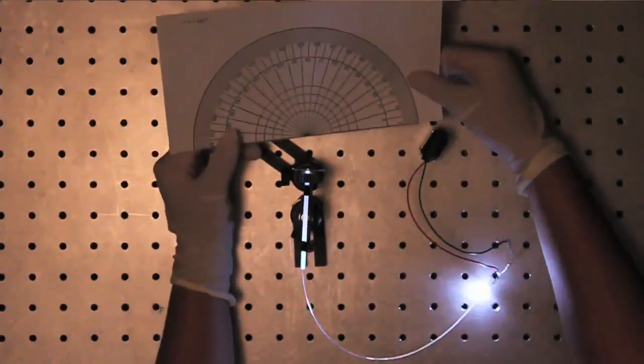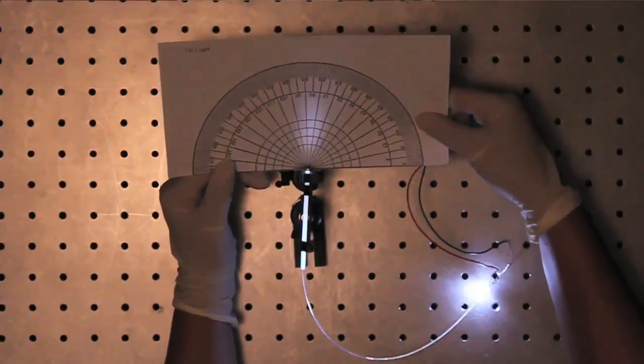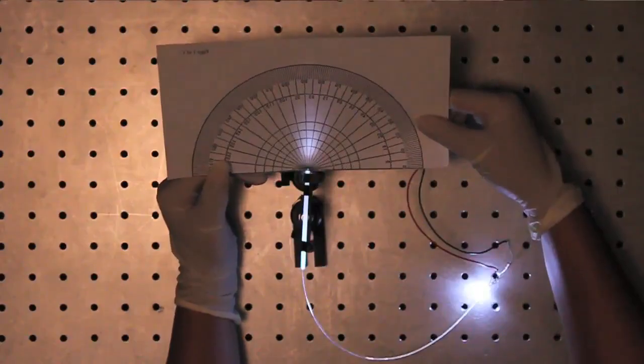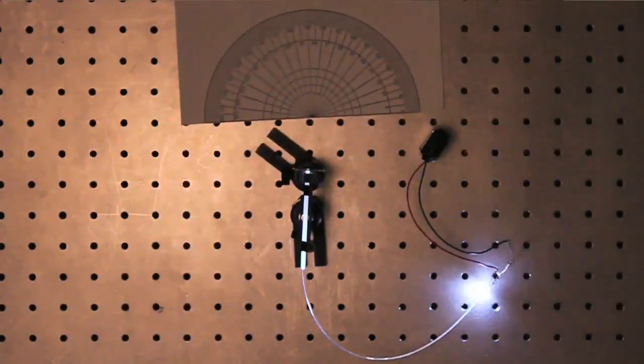Measure again the numerical aperture by observing the divergence angle using a protractor. Because the index of the Teflon tubing is known, this will allow you to calculate the index of ethylene glycol.